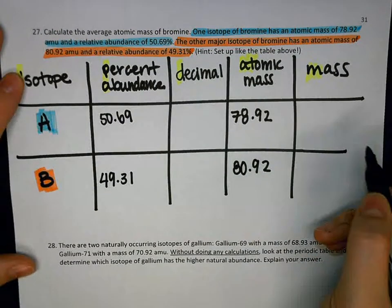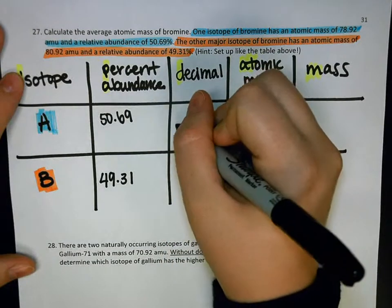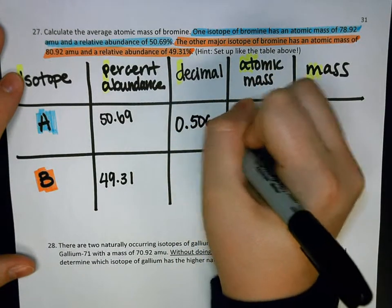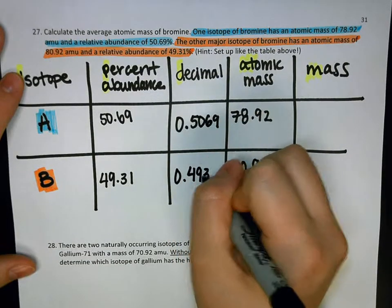First step that we need to do is take this percent abundance and write it as a decimal. The easy way to do that is just move the decimal over twice, which is the same thing as dividing by 100.